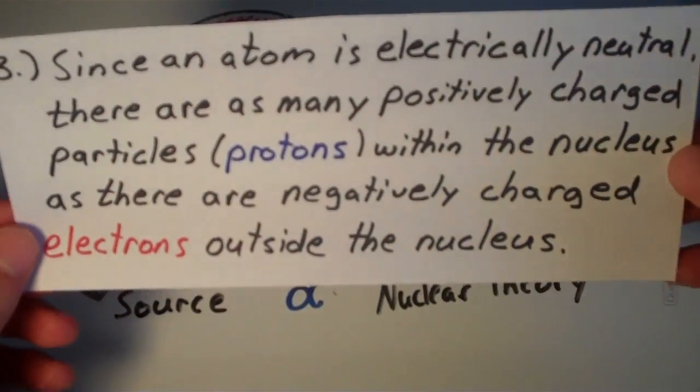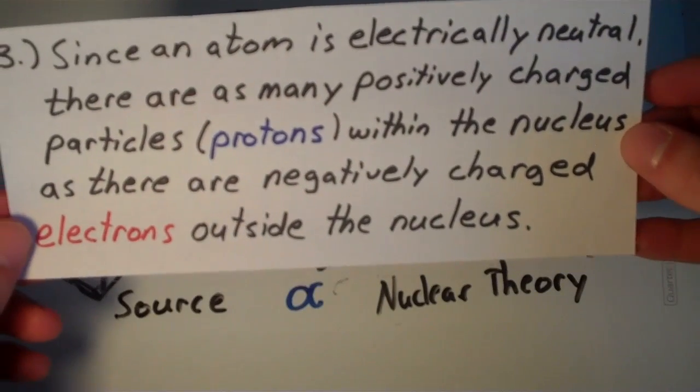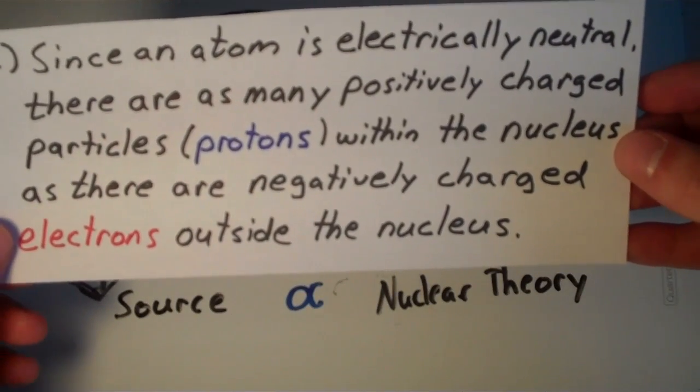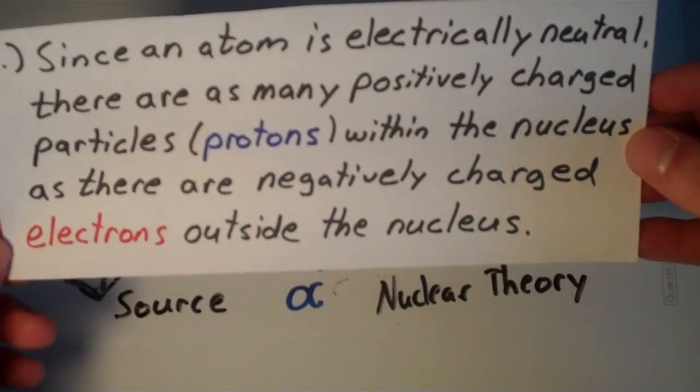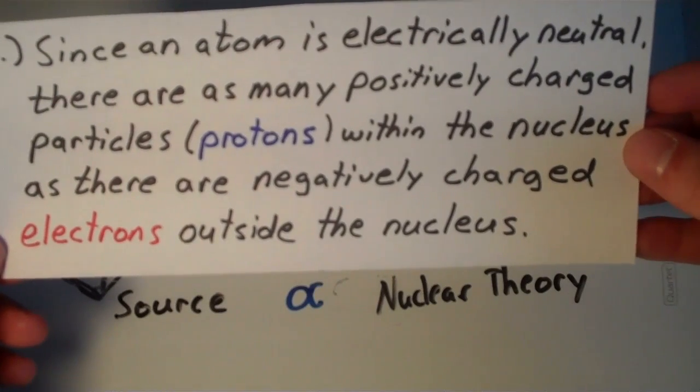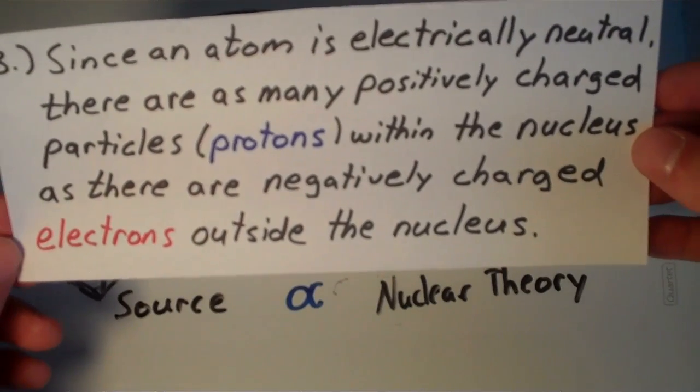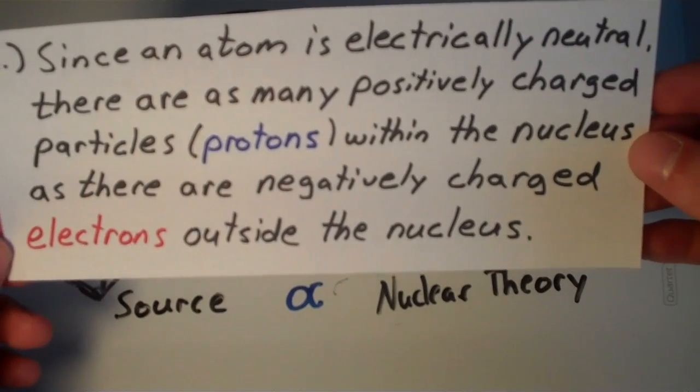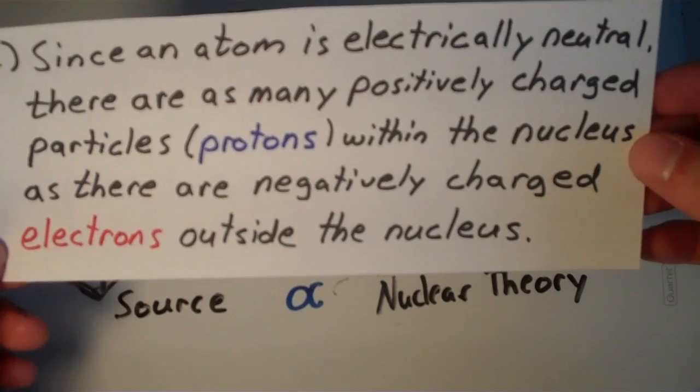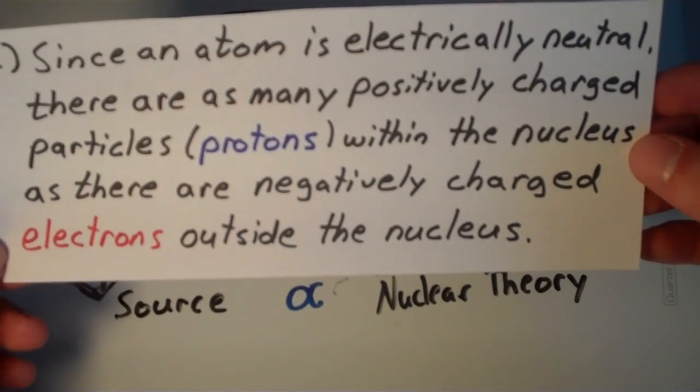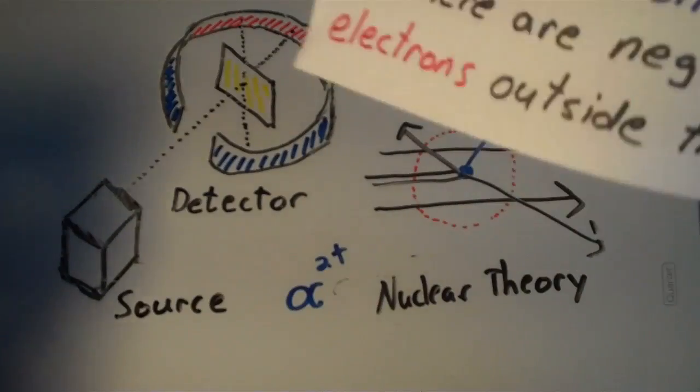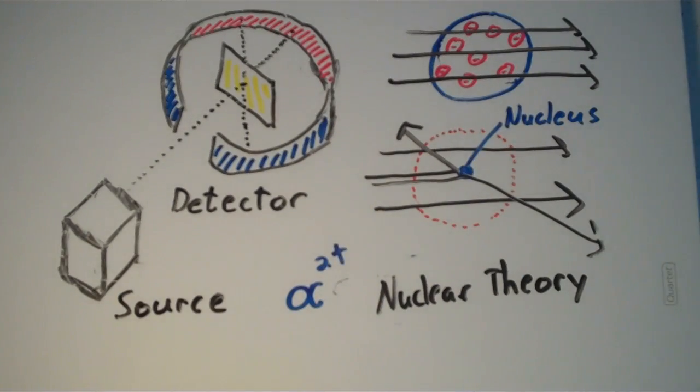And finally, since an atom is electrically neutral, there are as many positively charged particles, which we now call protons, within the nucleus as there are negatively charged electrons outside the nucleus. And that goes back to our question before, which explains how positively charged and negatively charged particles neutralize each other.